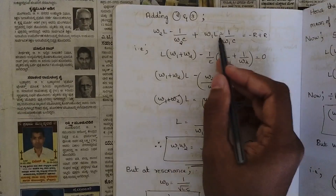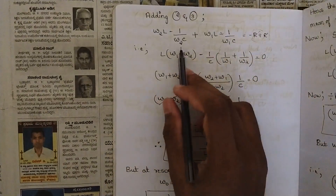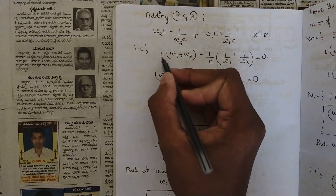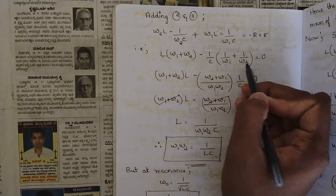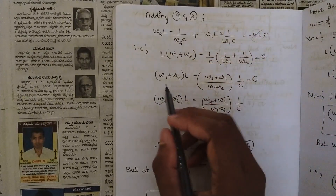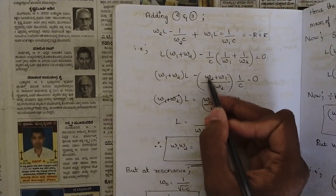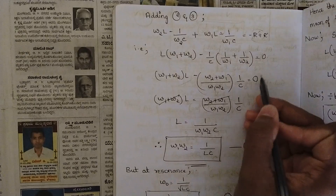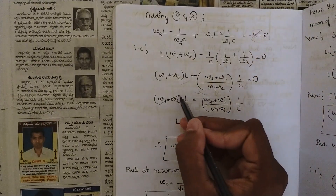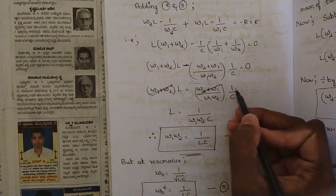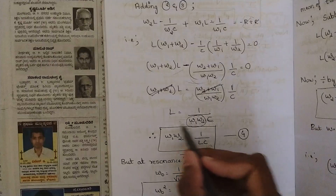Adding Equations 2 and 3: ω₂L − 1/(ω₂C) + ω₁L − 1/(ω₁C) = 0. Simplifying by taking the LCM, we get L(ω₁ + ω₂) − (1/C)(1/ω₁ + 1/ω₂) = 0. Cross-multiplying and simplifying, (ω₂ + ω₁)/(ω₁ω₂C) cancels with the L term, giving L = 1/(ω₁ω₂C), so ω₁ω₂ = 1/LC.